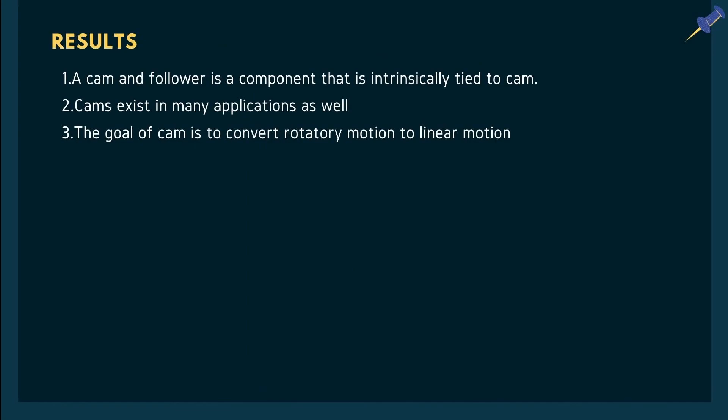In summary, we have covered the introduction, terminology, types of cam, follower, types of follower, motion, construction, principle, and working of cam and follower systems. The results are: a follower is a component intrinsically tied to the cam; cams exist in many applications; and the primary goal of a cam is to convert rotary motion to linear motion. Thank you.